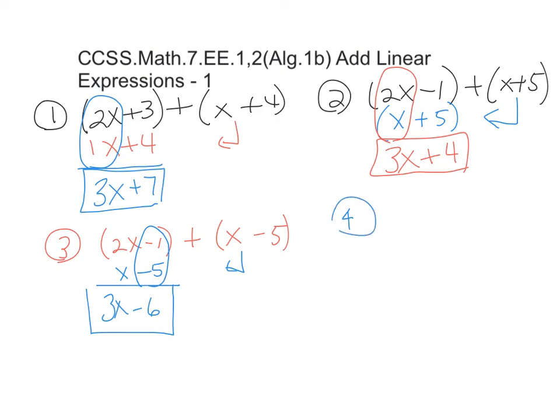And on to the fourth example. And we have a group of 2x minus 3. And we're adding another group of negative x plus 4.